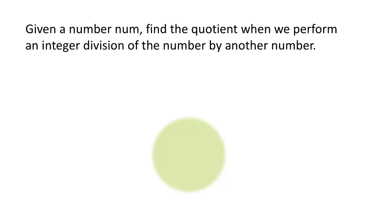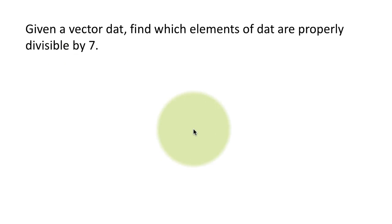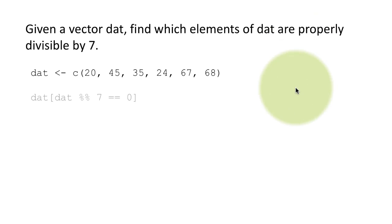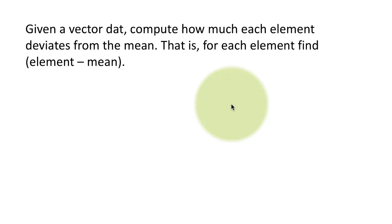Given a number num, find the quotient when we perform an integer division. This is the opposite of the modulo operator — give me the quotient. For example, 15 divided by 2 gives 7.5, but integer division gives 7. That is the %/% operator. The normal slash is the division operator; percent slash percent is the quotient operator. So 23 %/% 2 gives 11, and the remainder of course is 1. Similarly, to find which elements of a vector dat are divisible by 7, you use dat %% 7 == 0.